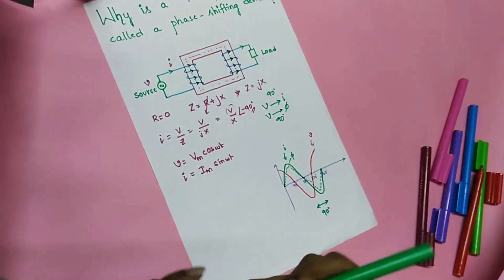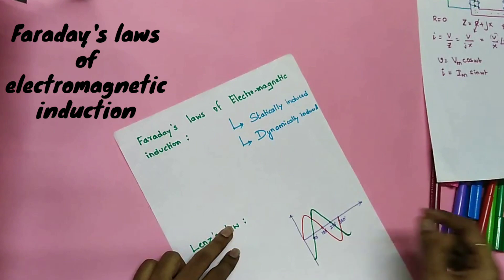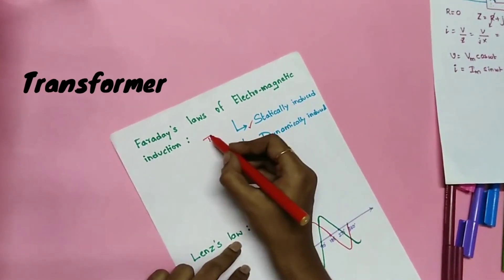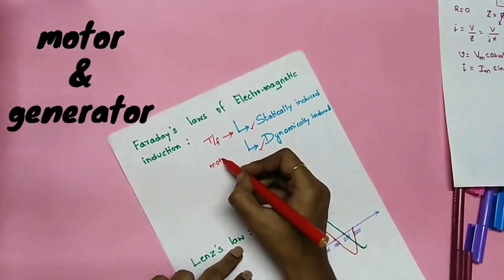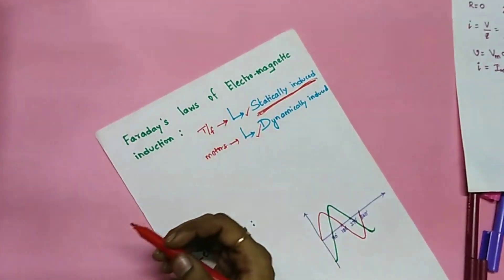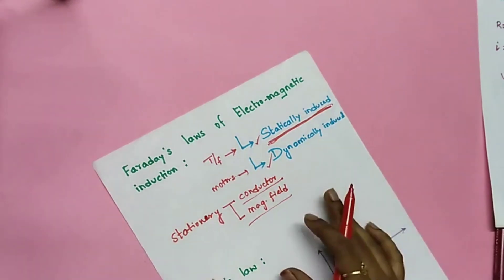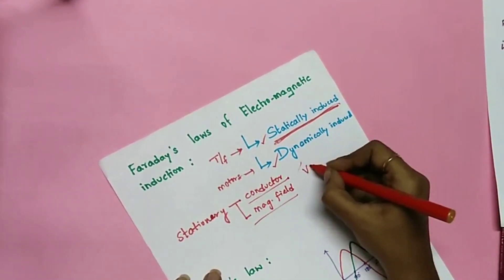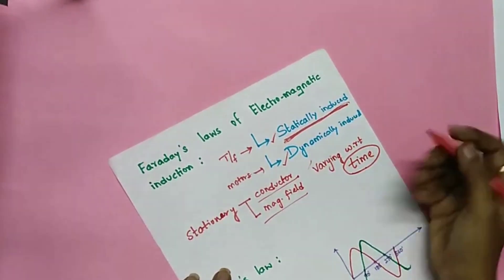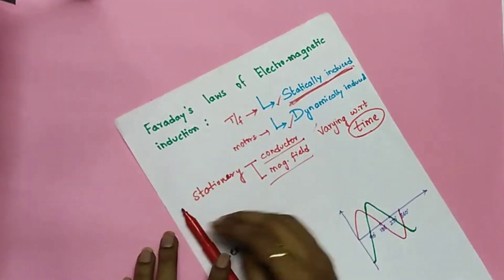So there is a phase displacement of 90 degrees between voltage and flux as well. Now let us discuss Faraday's laws of electromagnetic induction. EMF can be induced in two ways: statically induced EMF and dynamically induced EMF. Transformers work on the statically induced EMF principle. For statically induced EMF, all we need is a varying magnetic field with a stationary conductor.